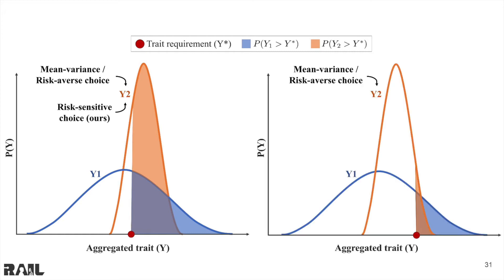However, if this task were to require more trait indicated by the red dot, the risk-averse and neutral algorithms would still choose the orange allocation, Y2, even though the probability of satisfying requirements is greater in the blue Y1 allocation. Our risk-sensitive method would choose the riskier allocation, Y1, in this case.